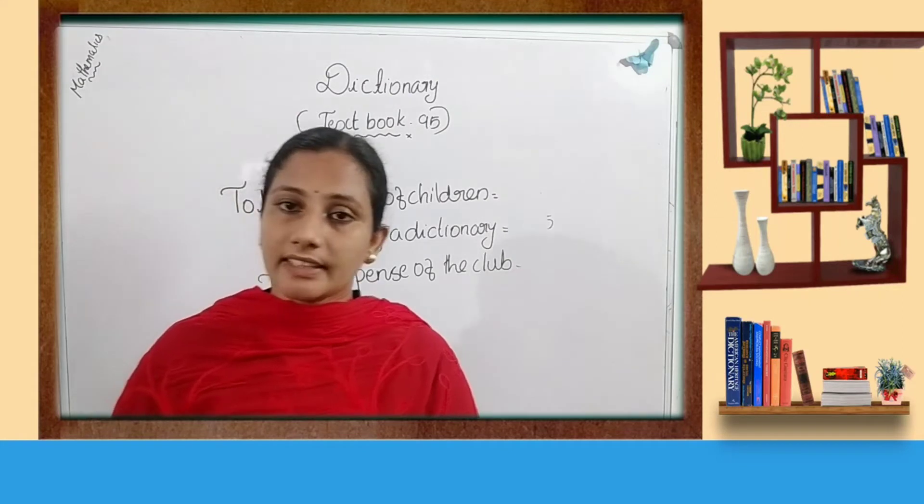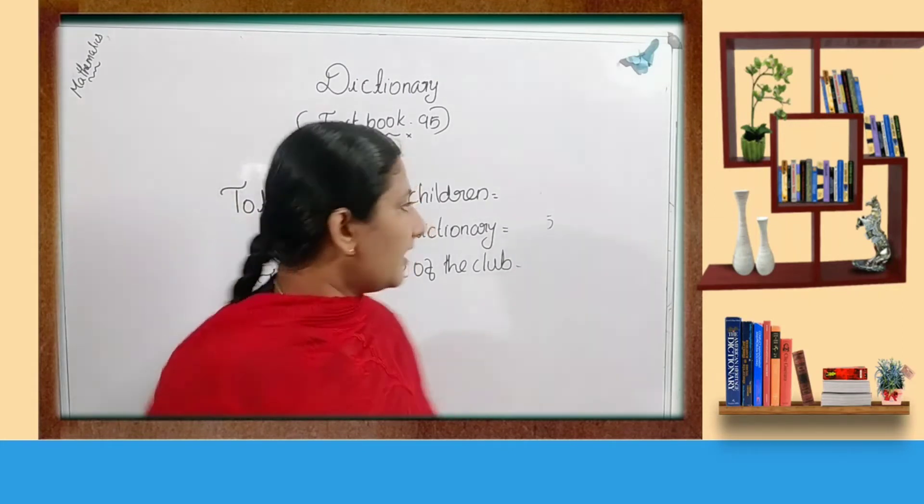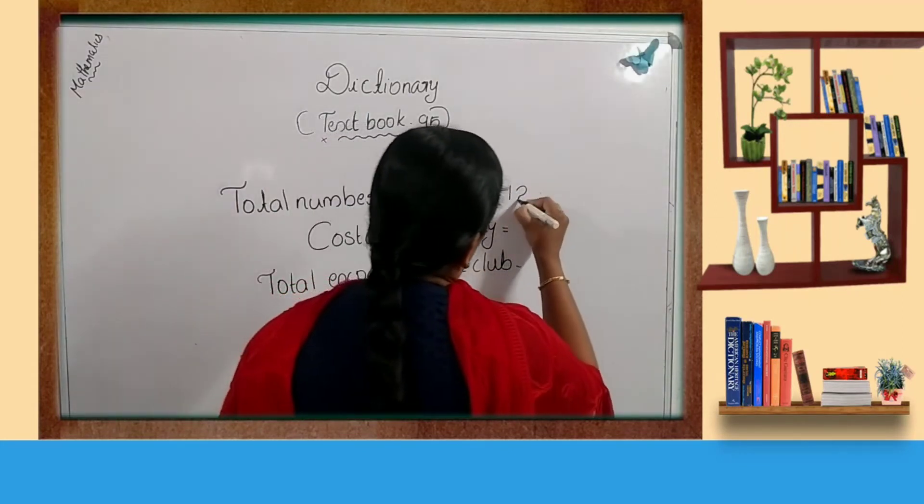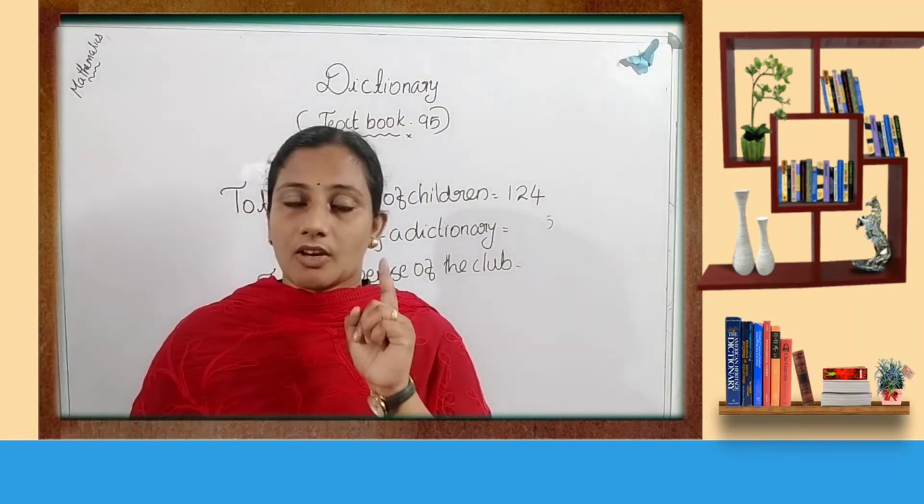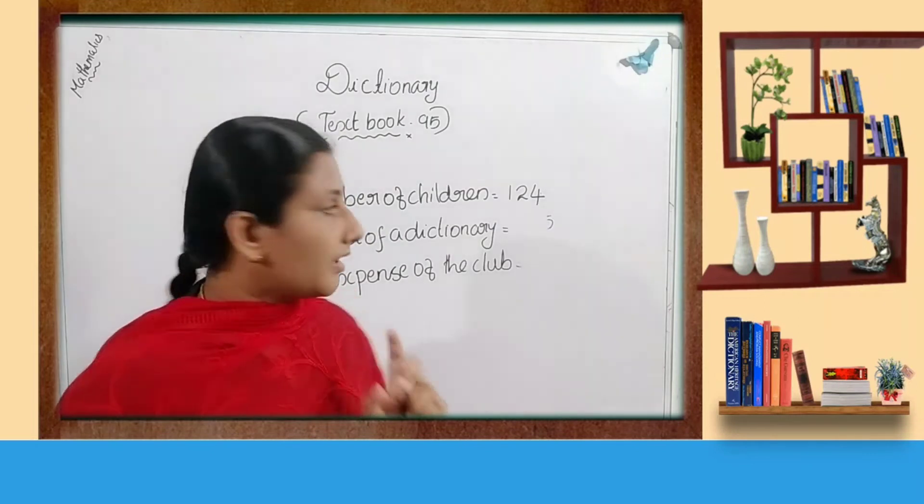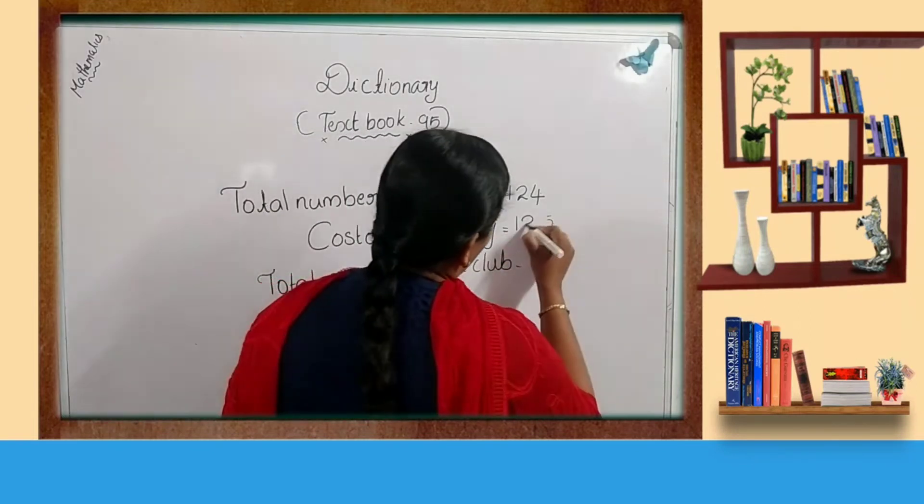How many children are there in the school in the 7th standard? Yes, 124 children. Then the cost of a dictionary. Cost of a dictionary, that is 125.